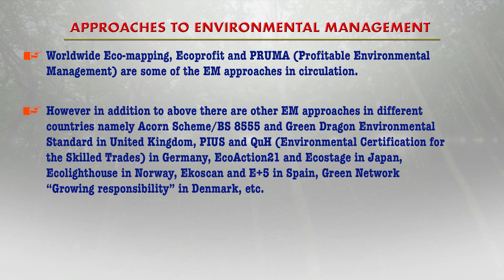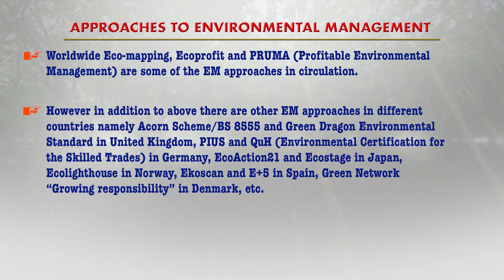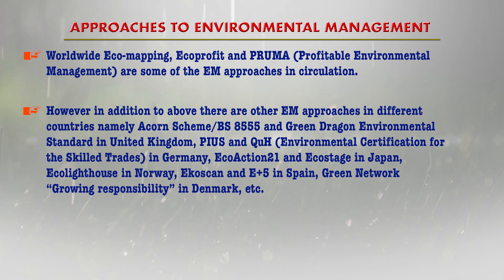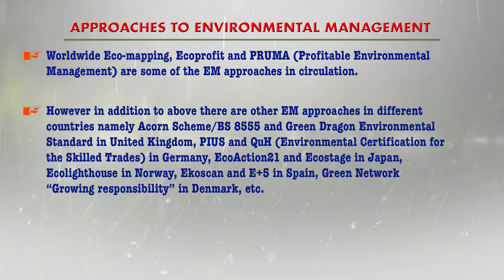Worldwide, eco-mapping, eco-profit, and PRUMA — that is profitable environmental management — are some of the environmental management approaches in circulation. In addition, there are many other EM approaches in different countries. For example, ECON scheme, B8555, and Green Dragon Environmental Standard are in the United Kingdom. Likewise, PIUS — an Environmental Certification for the Skilled Trade — is in Germany. Then EcoAction 21 and EcoStage in Japan, EcoLighthouse in Norway, EcoScon and Eplus in Spain, and Green Network and Growing Responsibility in Denmark. There are various types of environmental management approaches in different countries known by different names.